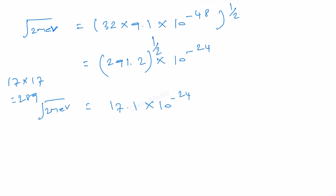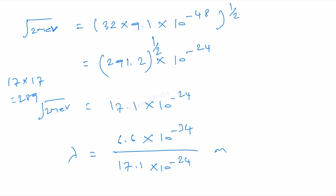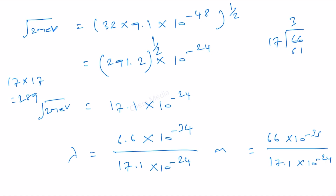Therefore lambda is equal to 6.626 times 10 to the power minus 34 divided by 17.1 times 10 to the power minus 24 meter. This can be written as 66 times 10 to the power minus 35 divided by 17.1 times 10 to the power minus 24. Dividing 66 by 17.1 gives approximately 3.8. Therefore lambda is equal to 3.8 times 10 to the power minus 11 meter.